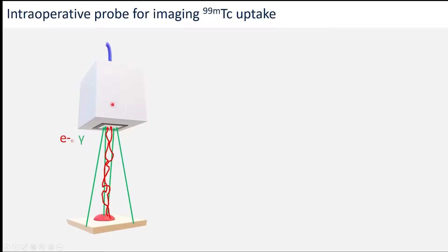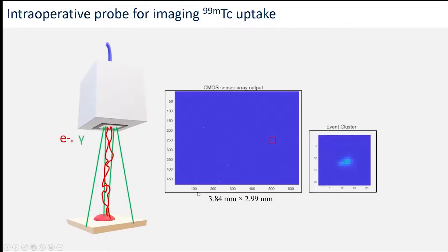Getting on with the single-photon imaging: what we have here is an intraoperative probe composed of basically a CMOS sensor, where what we're trying to do is image the location of a tumour which has a technetium-99M-labelled compound that's been taken up into that lesion — into that cancer. The idea is the surgeon would scan this around to locate that tumour and then know when all of the tumour has been resected.